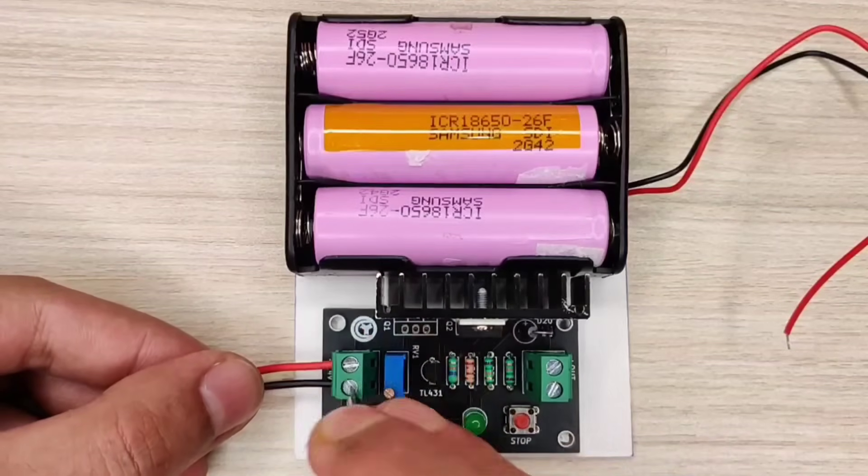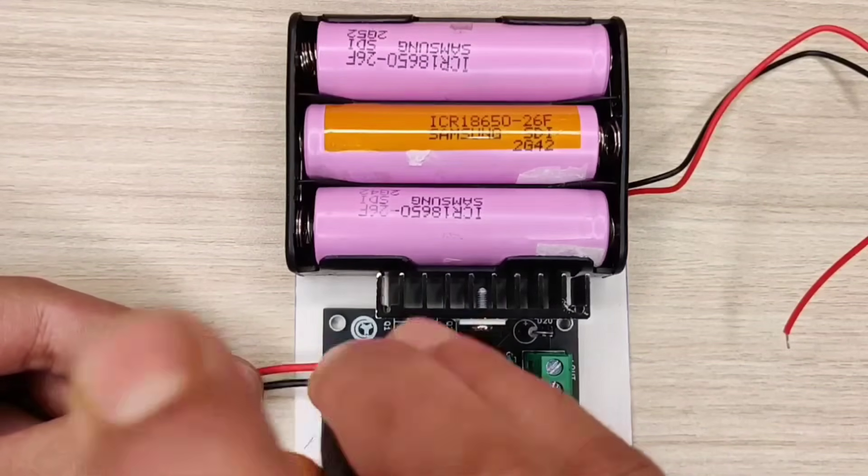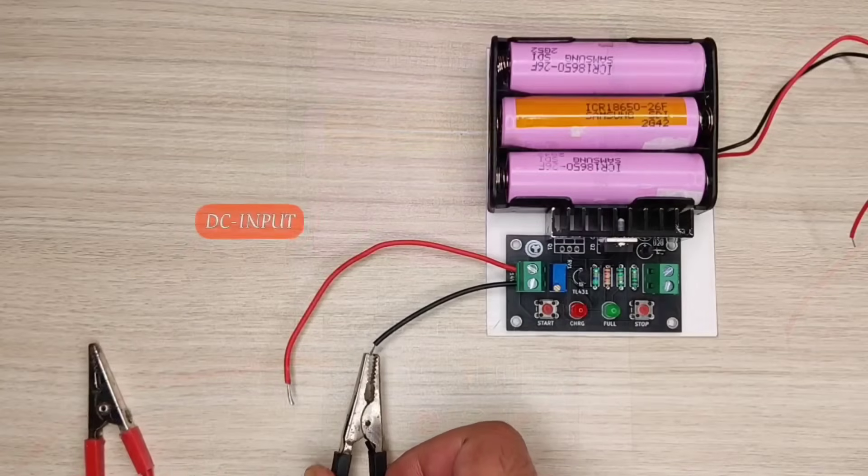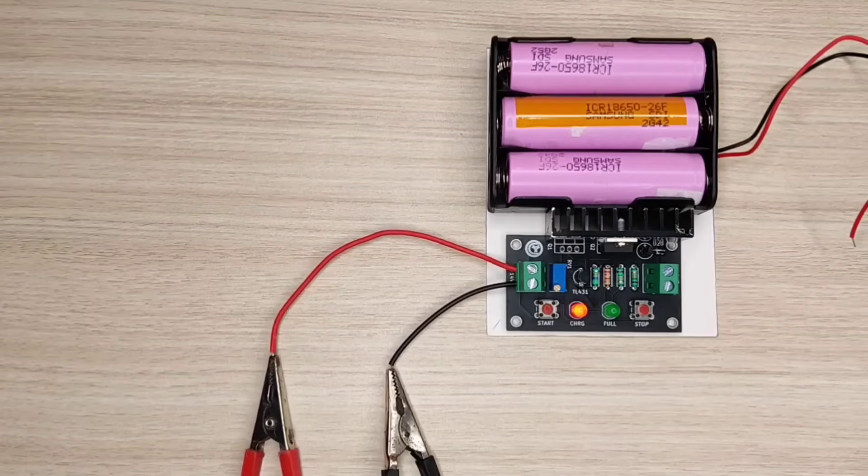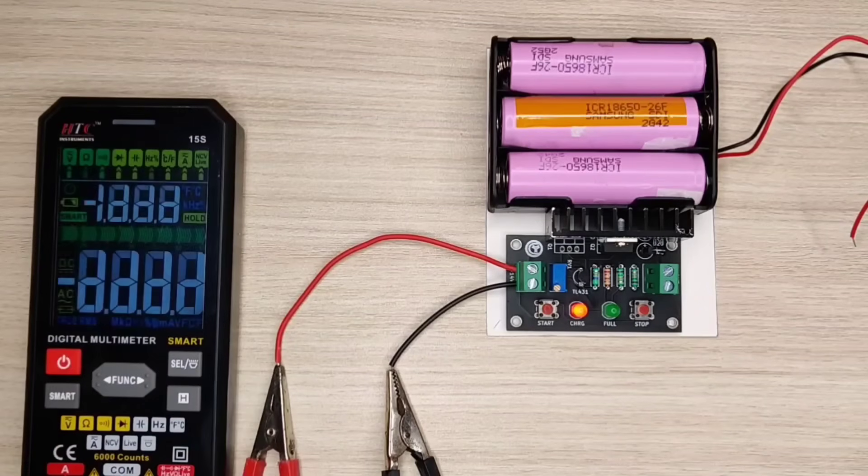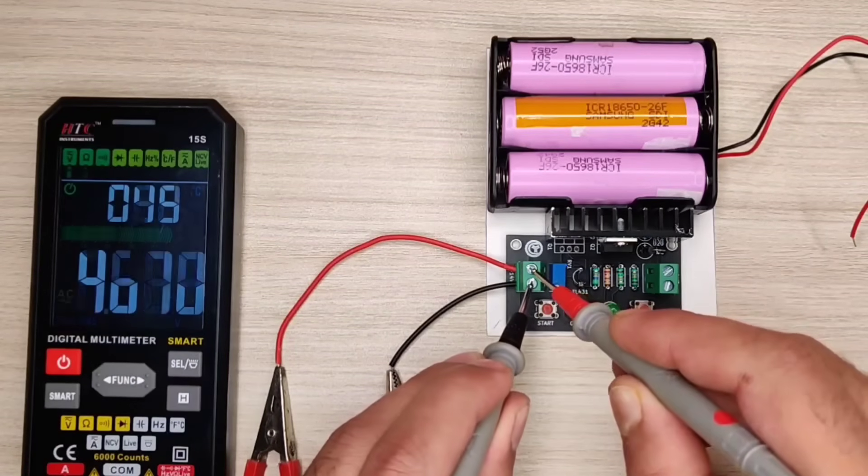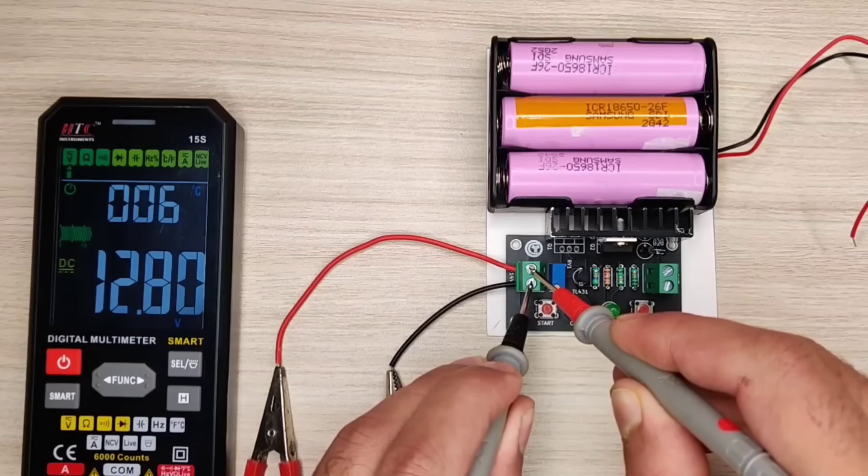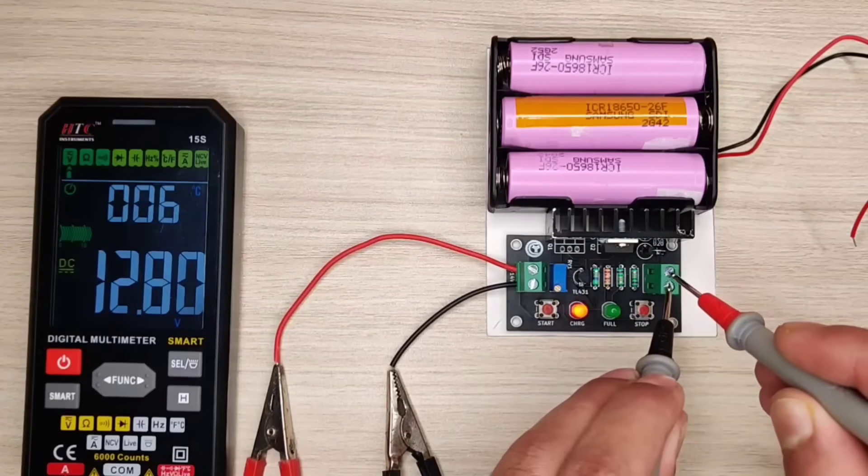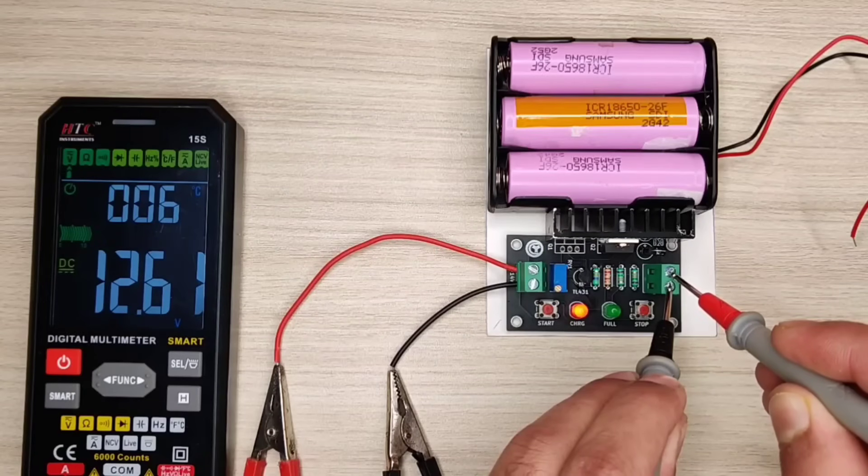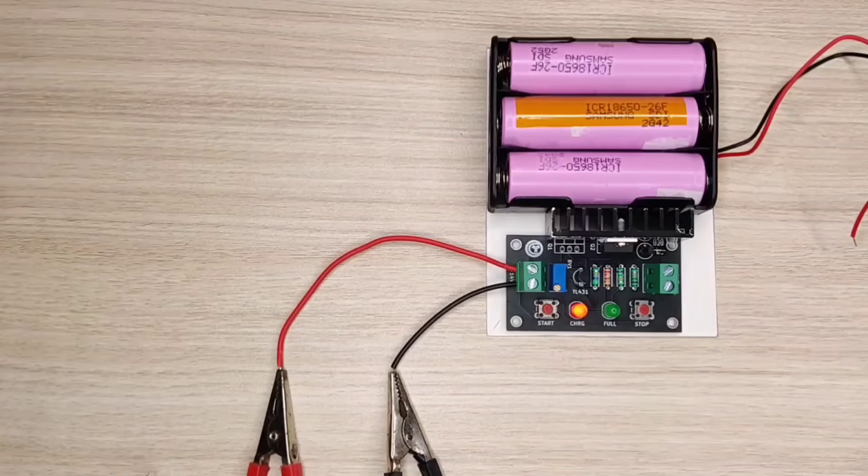Connect the wires at DC input connector. Now connect the DC supply of 12.8 volts. As you can see the input supply is at 12.8 volts. And the output is exact 12.6 volts required for 3 batteries charging, as 4.2 volts required for each battery.